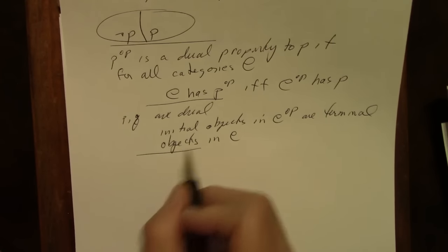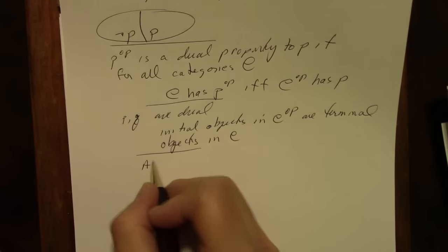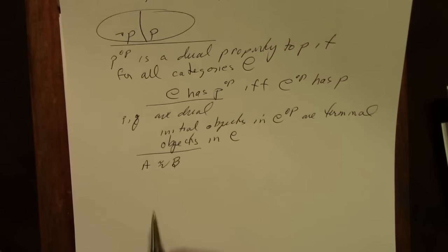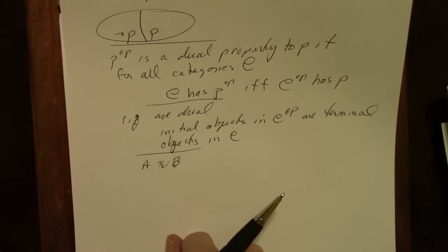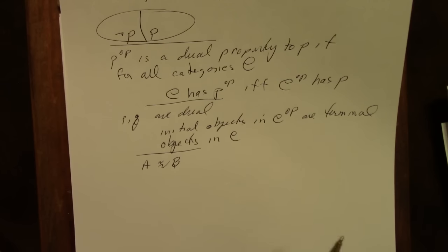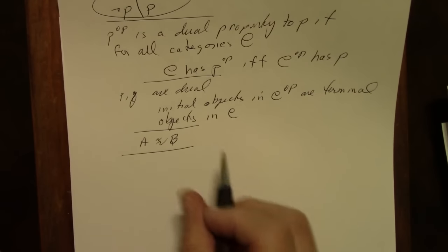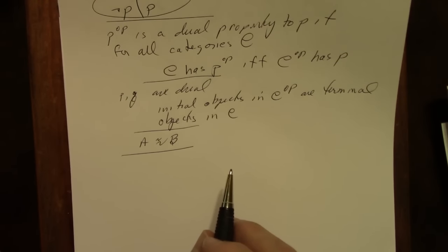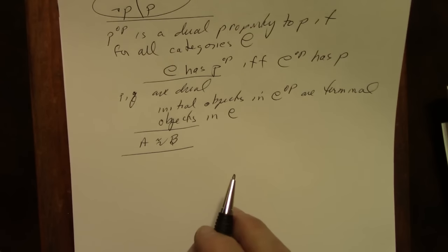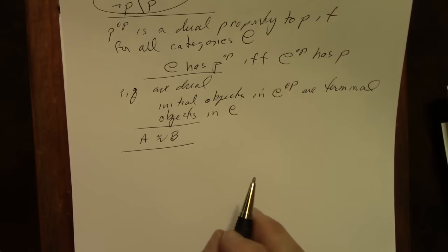The property of being isomorphic is a self-dual property: the dual of being isomorphic is being isomorphic, because if A and B are isomorphic in C then they're isomorphic in the dual category as well. So we have the dual of a category, the dual of a property, and there is also something called the dual of a statement.